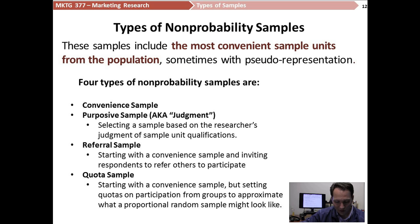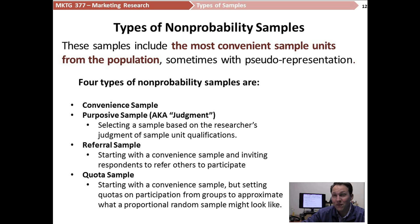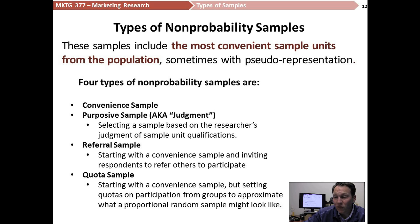Now let's talk about some non-probability techniques — four different types. The most common is called a convenience sample. Non-probability samples mean we're going to take the most convenient sample units from the population. Sometimes we'll have pseudo representation, meaning it will appear to be representative but isn't necessarily so. In the research field, we often just call a non-probability sample a convenience sample because that's what it is — drawing people who are convenient to participate without really worrying about whether they're representative or not.